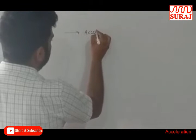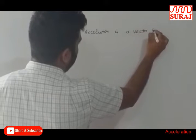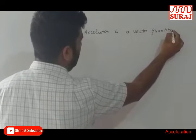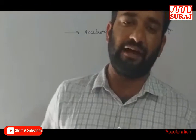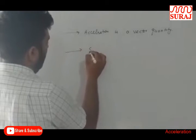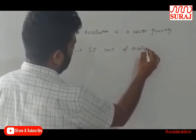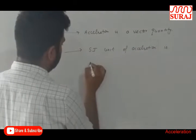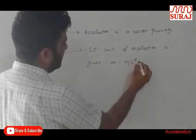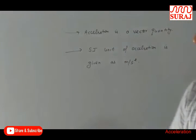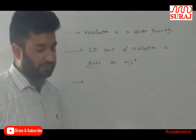Acceleration is a vector quantity. Vector quantities are those which have both magnitude as well as direction. The SI unit of acceleration is meter per second square (m/s²).